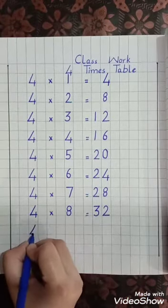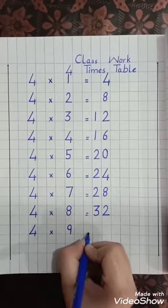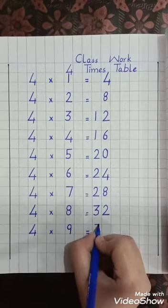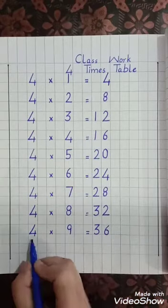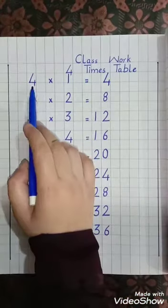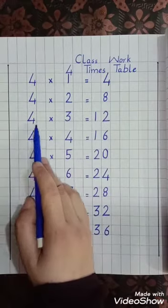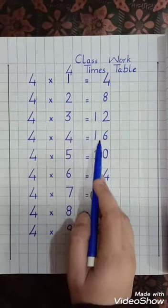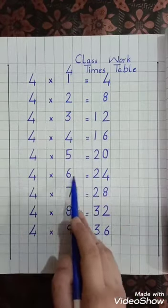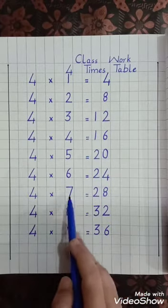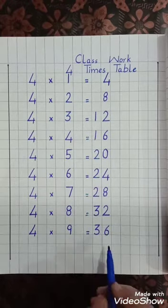Four, multiply, nine, equal lines — 36. Four nines are 36. Four ones are 4, four twos are 8, four threes are 12, four fours are 16, four fives are 20, four sixes are 24, four sevens are 28, four eights are 32, four nines are 36.